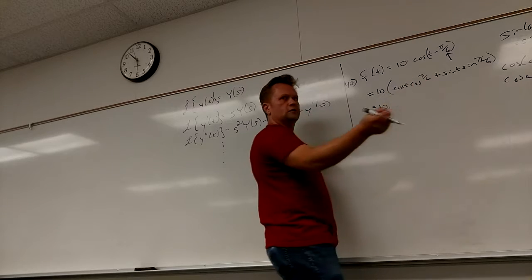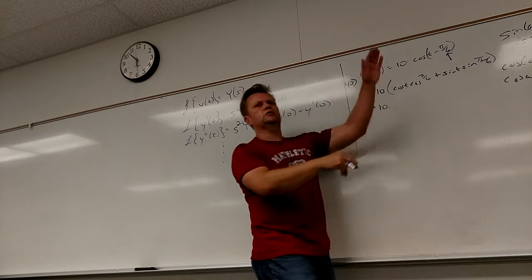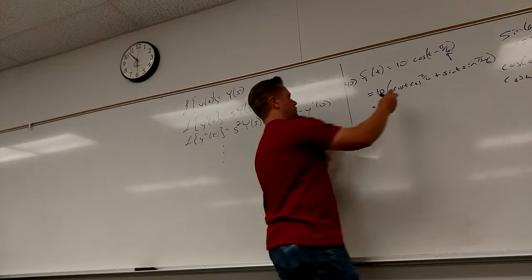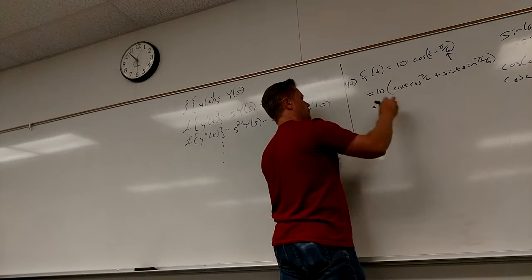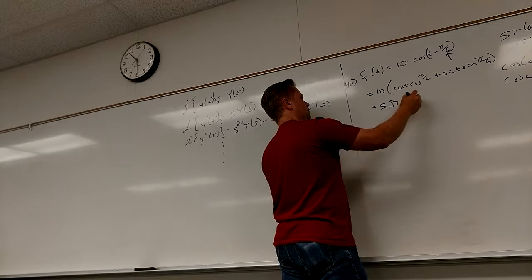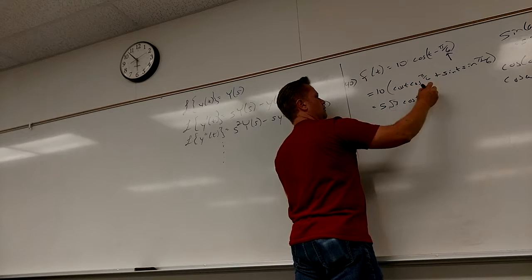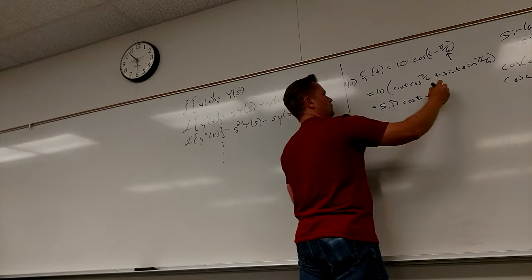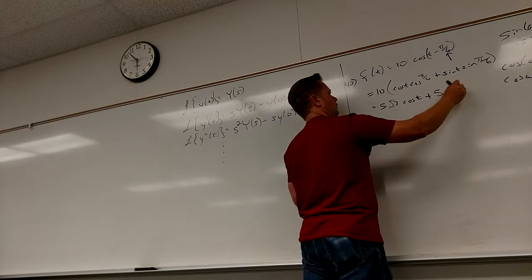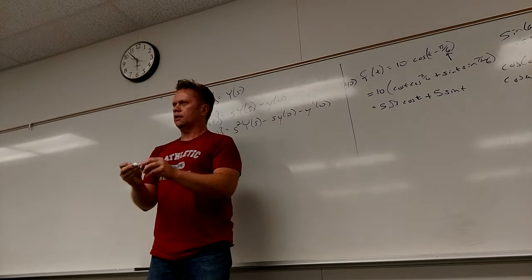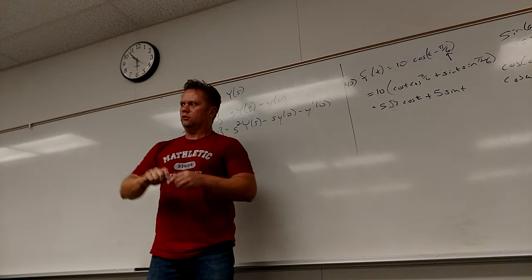Yeah, because π over 6, of course, is 30 degrees, it's closer to the x-axis. Cosine likes that, so it's bigger when it's closer to where it likes it. So it's root 3 over 2, so it becomes 5 root 3 over 2 cosine T, plus sine T. So that's got to be the other one. Yeah, one half, so 5 over 2 sine T. And now you can attack it with Laplace. Kill it with Laplace.